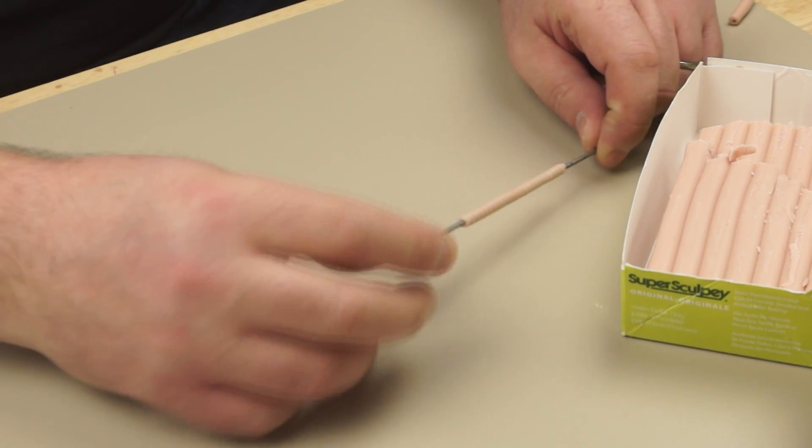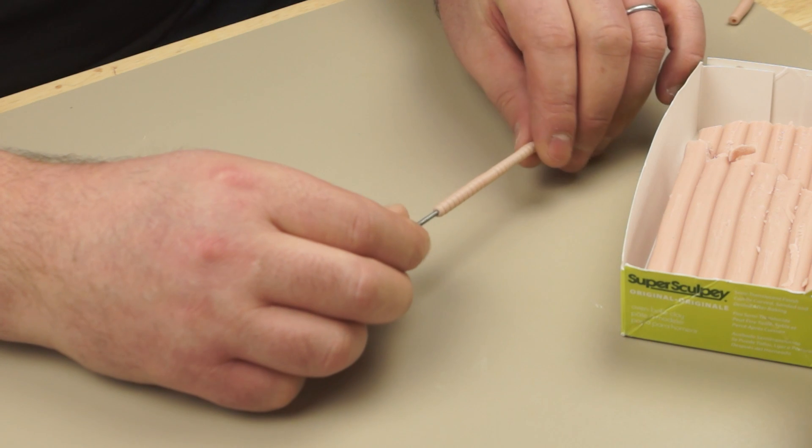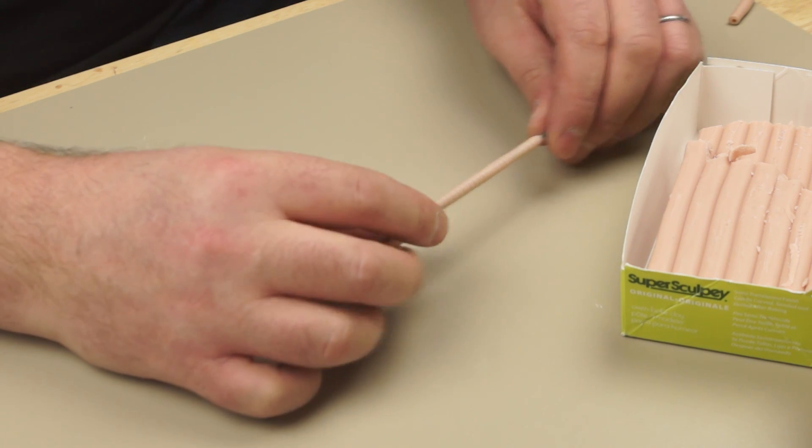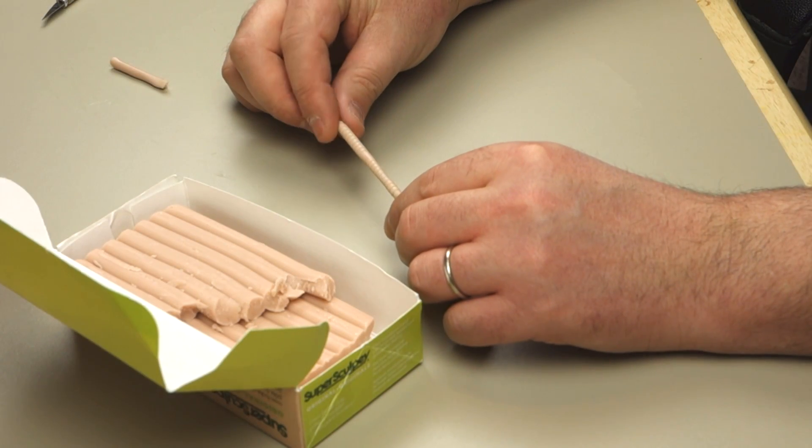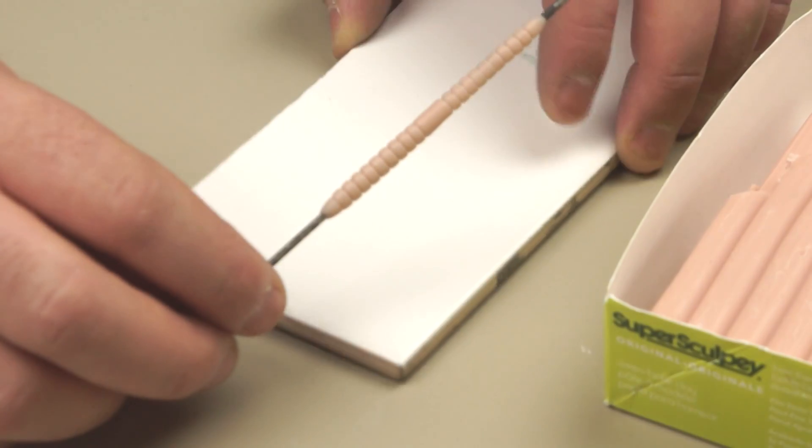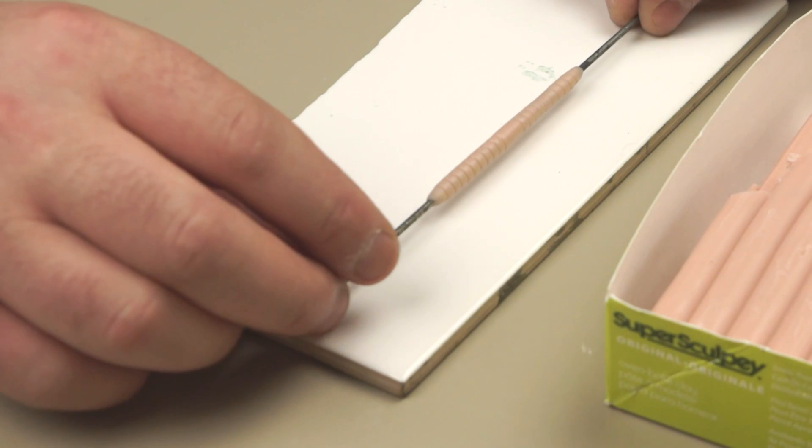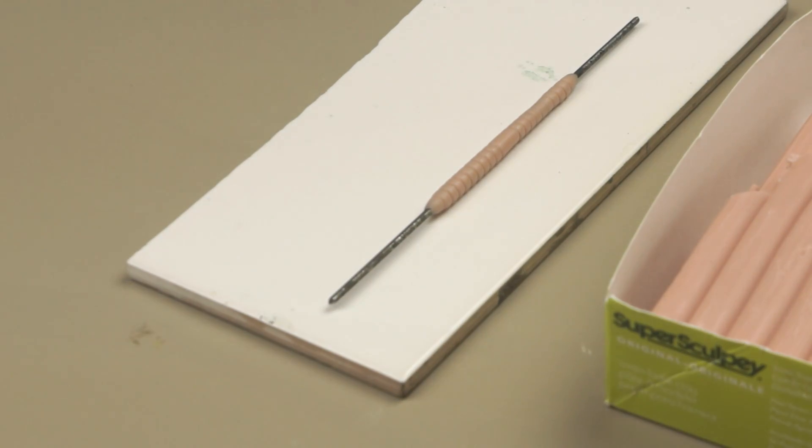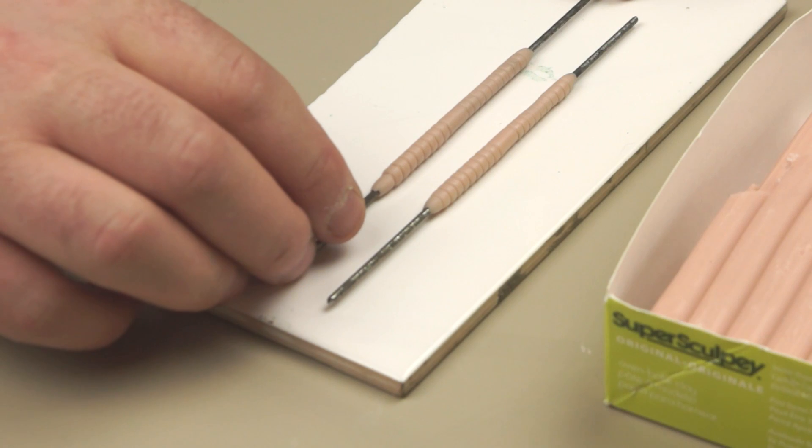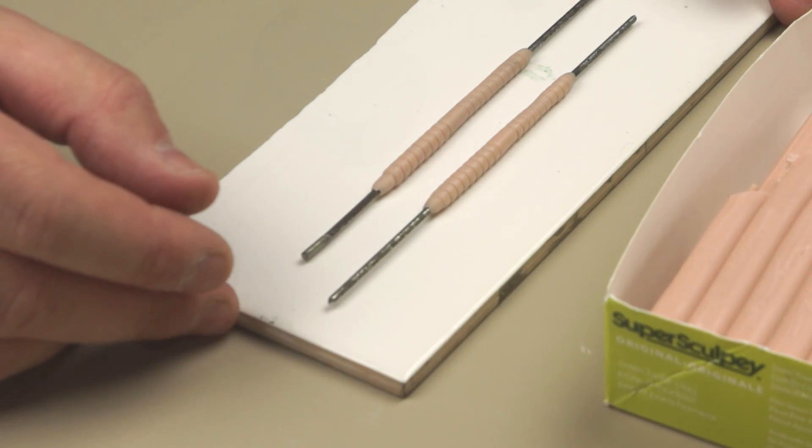And I've left this gap here just to make it a bit more worm-like. With that main texturing done I can just neaten off the ends and kind of make them taper. And then I can find a ceramic tile for the oven. I'm going to lay my worm on. I've also made another worm approximately the same dimensions. I'm going to bake these two together.